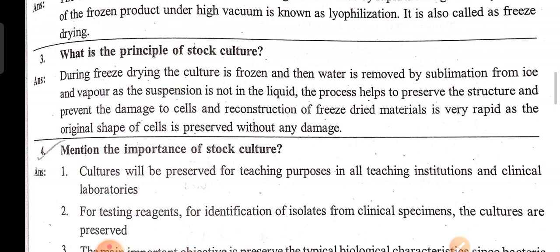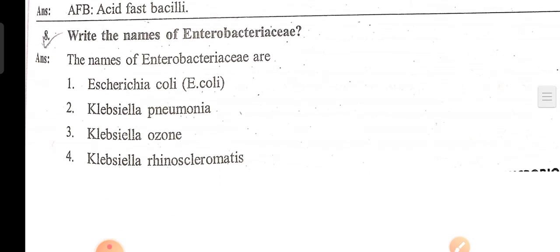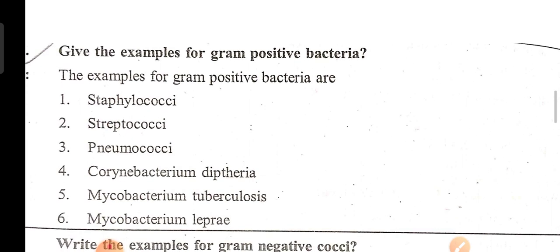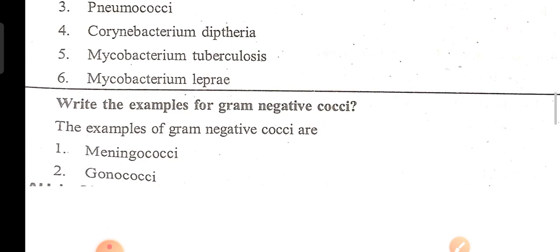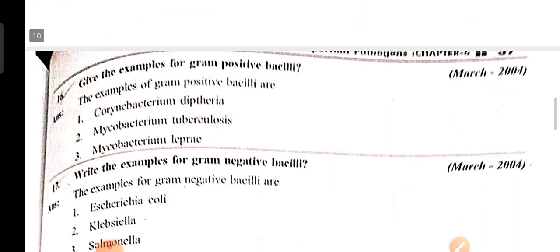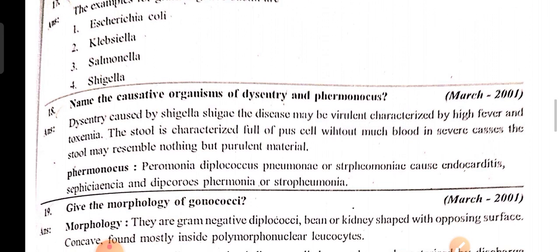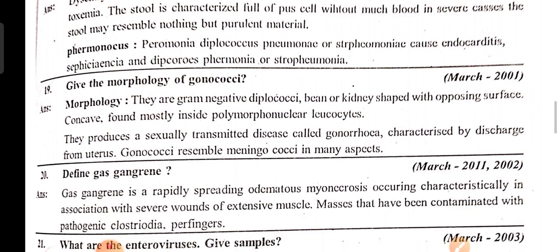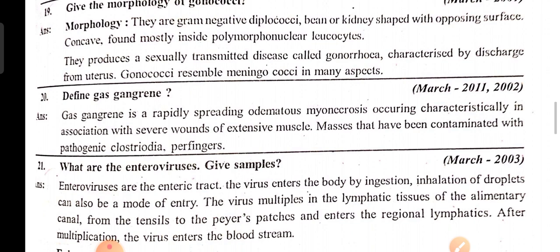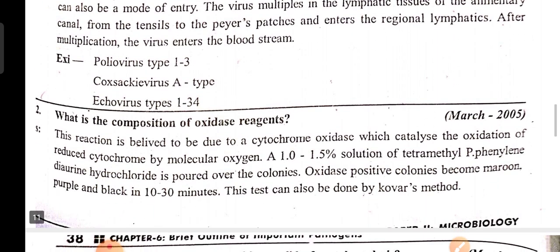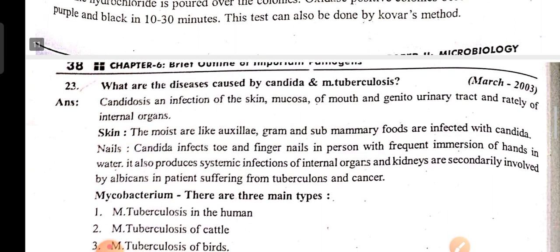What is the principle of stock culture? Mention the importance of stock culture. Expand the term IFV. Write the names of Enterobacteriaceae. Give examples of gram-positive bacteria. Write examples of gram-negative bacteria. Name the causative organisms of dysentery and pneumococcus. Give the morphology of gonococcus. Define gas gangrene. What are the enteroviruses? Give examples or samples. Write the composition of the oxidase reagent.